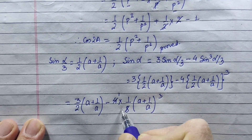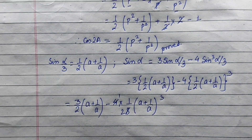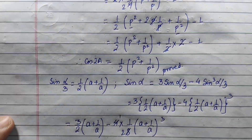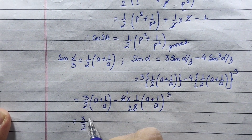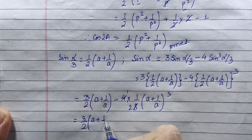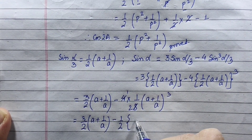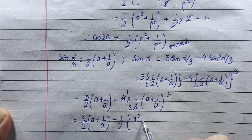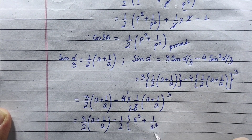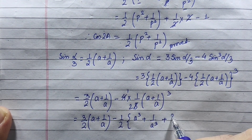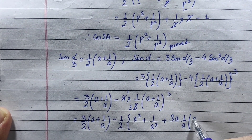4 is 4, so 4 into 1/8 is one half. Using the a plus b cube formula: a cube plus b cube plus 3ab times a plus b. So we get 3 by 2 times a plus 1 by a, minus 1 by 2 times a cube plus 1 by a cube, plus 3 times a times 1 by a times a plus 1 by a.